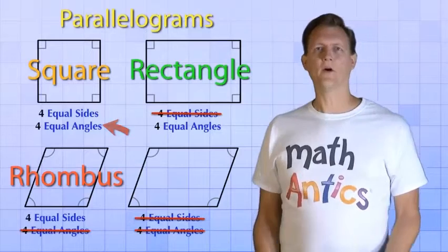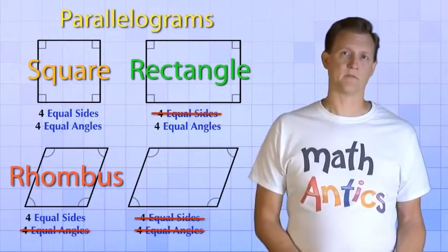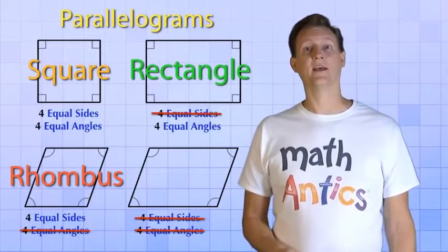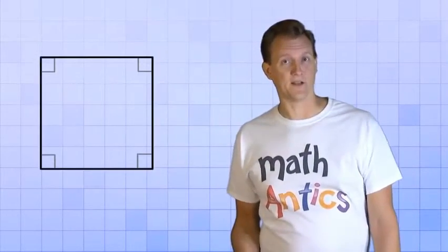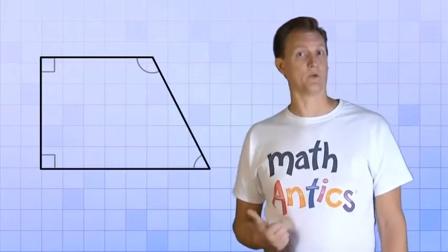Okay then, if all the quadrilaterals we've seen so far are examples of parallelograms, what's an example that's not a parallelogram? Well to see one, let's start over with our square again, but this time we're going to change it by moving just one of its vertices, like so.